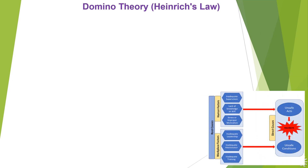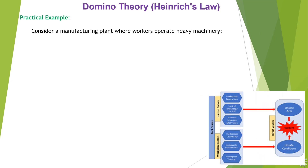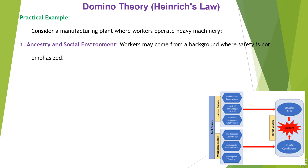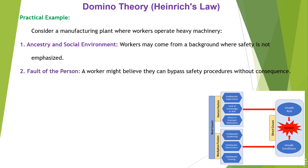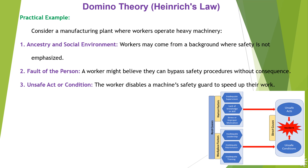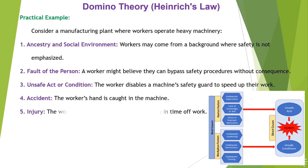Practical Example: Consider a manufacturing plant where workers operate heavy machinery. 1. Ancestry and social environment — workers may come from a background where safety is not emphasized. 2. Fault of the person — a worker might believe they can bypass safety procedures without consequence. 3. Unsafe act or condition — the worker disables a machine's safety guard to speed up their work. 4. Accident — the worker's hand is caught in the machine. 5. Injury — the worker suffers a severe injury, resulting in time off work.